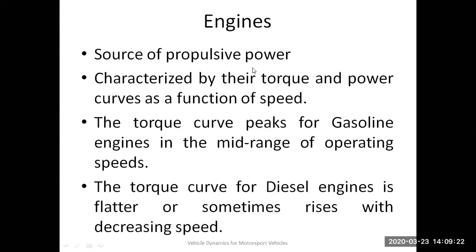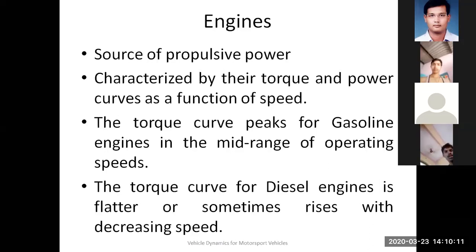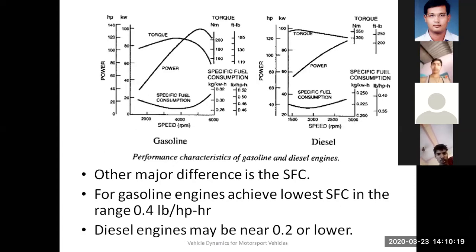The engine is the source of propulsive power and it is characterized by torque and power curves as a function of speed. These curves define what is the overall power you get at the end of your wheel. The torque curve for gasoline engines is different from diesel engines. For gasoline engines, the torque curve peaks in the mid range of operating speeds. For a diesel engine, it is going to be flatter, or sometimes it will rise with decreasing speed. We are going to compare what happens in terms of torque and power for a gasoline engine on the left and a diesel engine on the right.